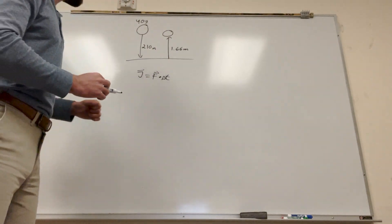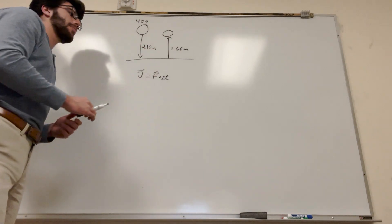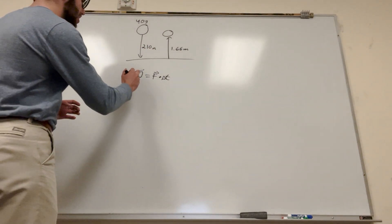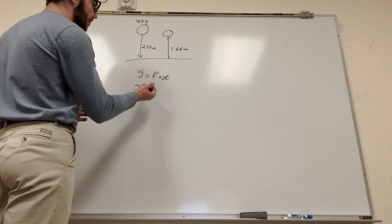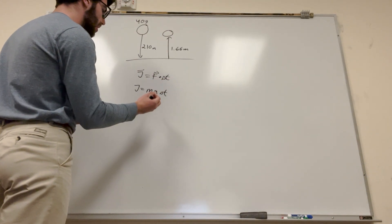Okay, so this isn't going to help us, right? We can't really find change in time in a problem like this. So we want to rearrange this to find something we actually can use. So what you can say is impulse is equal to force, which is equal to mass times acceleration, times delta t, right? Okay, well then let's expand this even further.